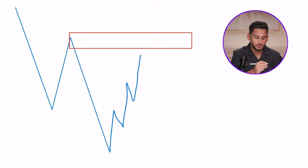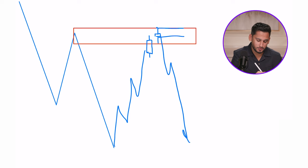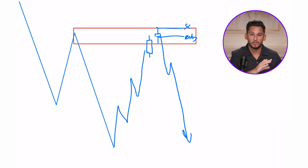We need to see that confirmation on M15 or H1 to confirm that rejection — get the wick reversal, put a stop loss above that zone and carry through. What we'll wait for is, for example, a bullish candle, then we'd want to see a doji. Once we've seen that doji, we enter our sell, stop loss at the high, and then trade it down to make a lower low. We can still get a decent entry and a decent stop loss.